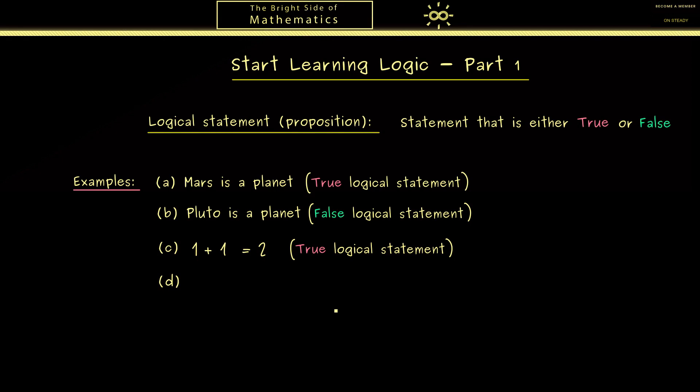Of course such logical statements coming from mathematics can also be formulated with english words. For example we could say the number 5 is smaller than the number 2. So here we need only knowledge of the natural numbers and how they are ordered. Then you can say yes this is also a logical statement but it is false.